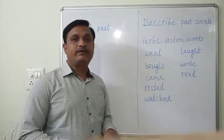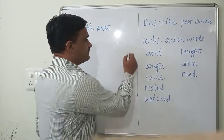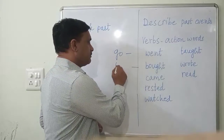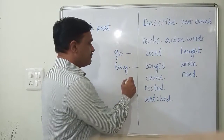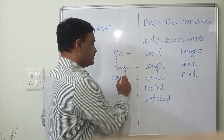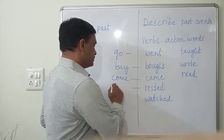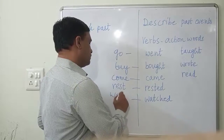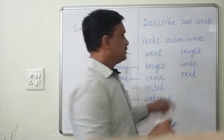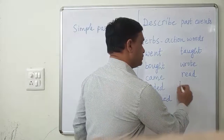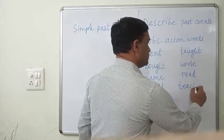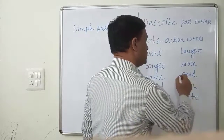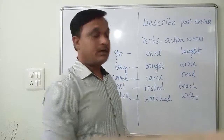So which is the first form of 'went'? The first form of went is 'go' — go is the basic form. Bought — buy is the basic form. Came — come is the basic form. Rested — rest. Then watched — watch. The basic form of taught is teach. Basic form of wrote is write. Basic form of read is read.